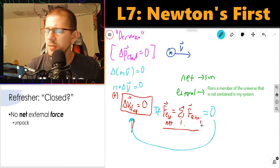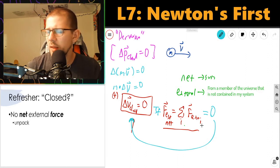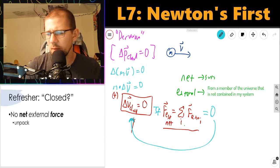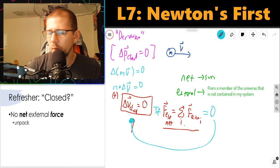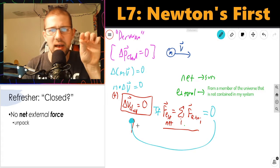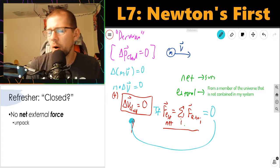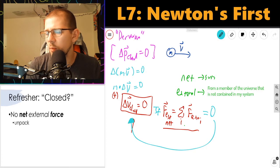To be super specific, that really for a system refers to a change in velocity of the center of mass of the system. For a single particle, which is mostly what we're going to be worried about, it really is just the single velocity of the single particle.